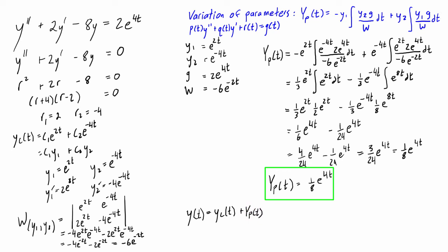We have the complementary solution right here. That's pretty messy. Maybe I'll just do a little hand-drawn box around it. Complementary solution. And so when we add these two together, we have our general solution y of t is just equal to c1e to the 2t plus c2e to the negative 4t plus one eighth e to the 4t.